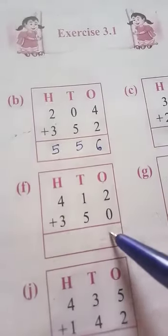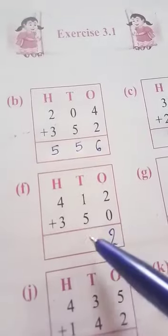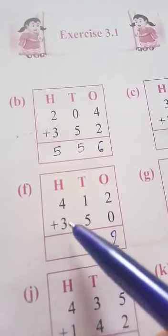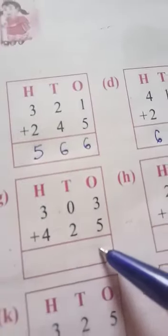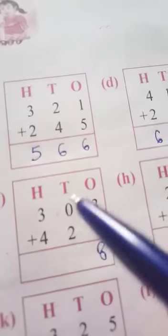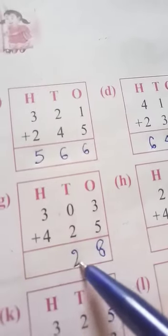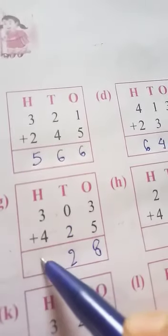2, 0 add equals 2. 5, 1 add equals 6. 4, 3 add equals 7. Next, 3 add equals 8. 0, 2 add equals 2. 2 and 4 add equals 7.